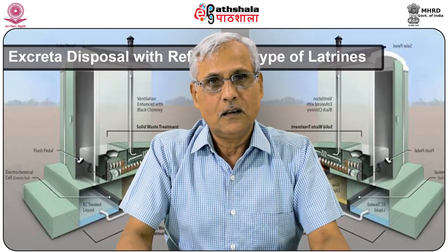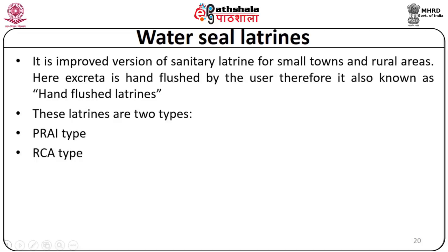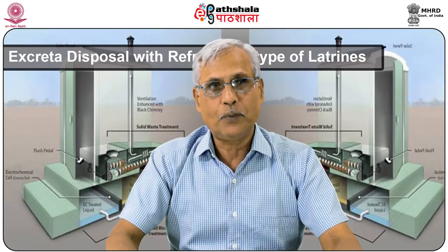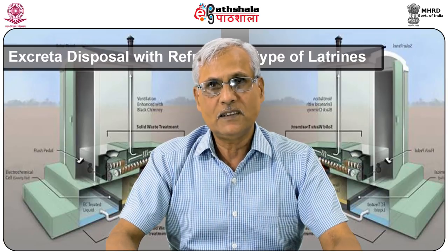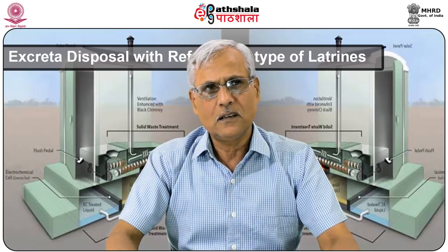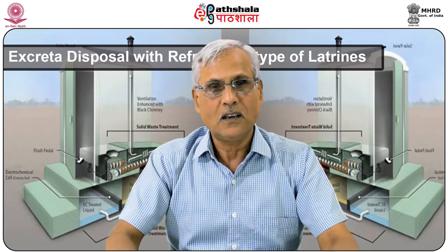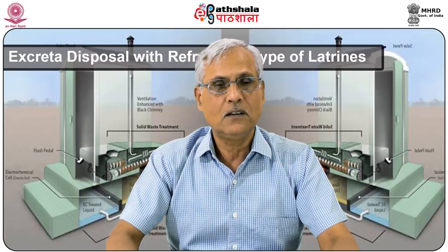Water seal latrines are getting importance in the rural sanitation program. It is an improved version of selected latrines for small towns and rural areas. The pan is hand-flushed by the user, so it is also known as hand-flush latrines. These latrines are of two types: PRA type and RCA type. Regarding septic tanks, in the absence of a public sewage system, sewage is disposed of through septic tanks. This brick-and-cement tank has two chambers; it has an inlet through which excreta enters, and effluent is collected in a constructed pit through an outlet. Periodic removal of sludge from the tank is essential.